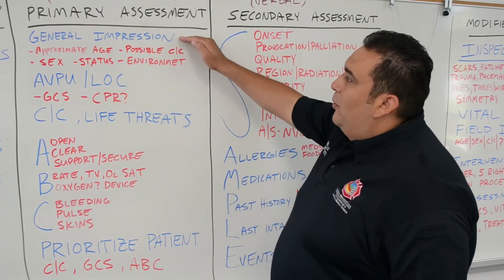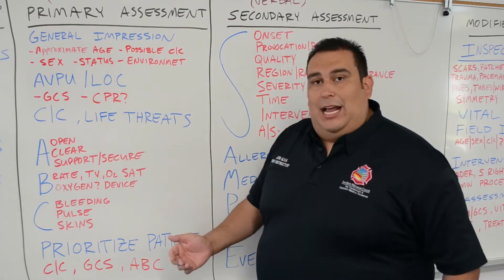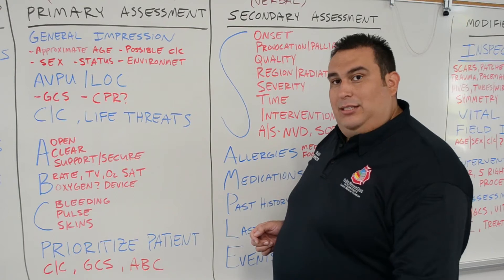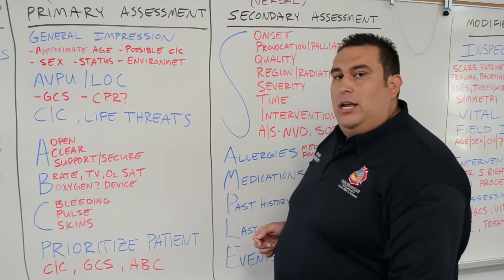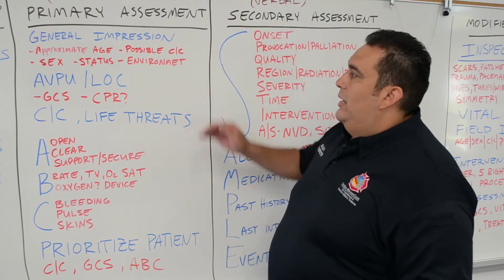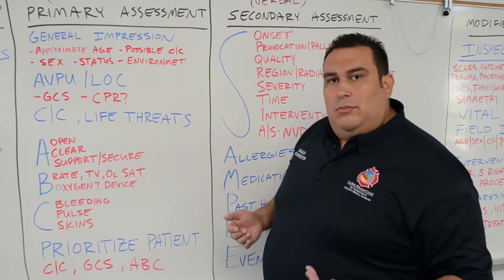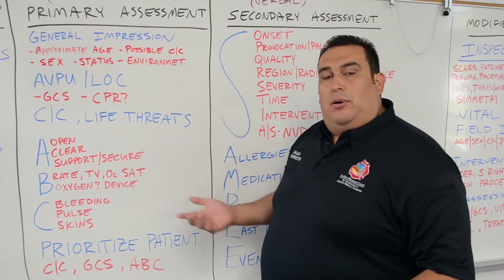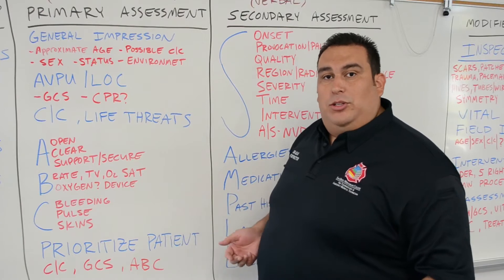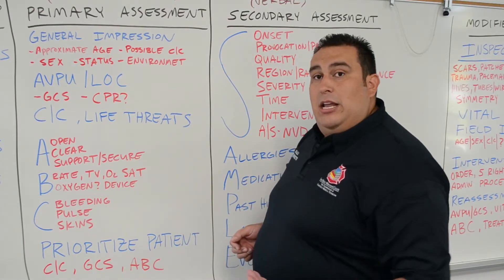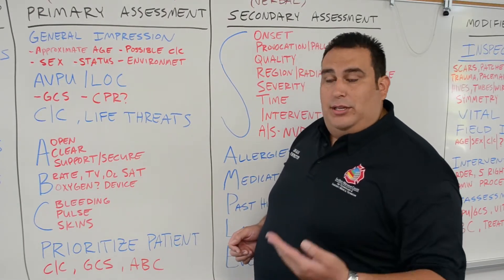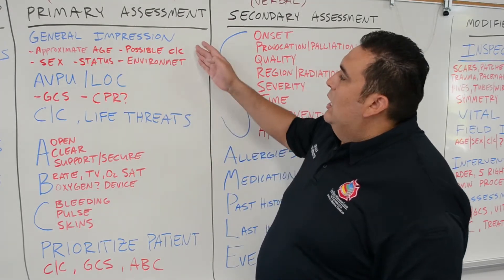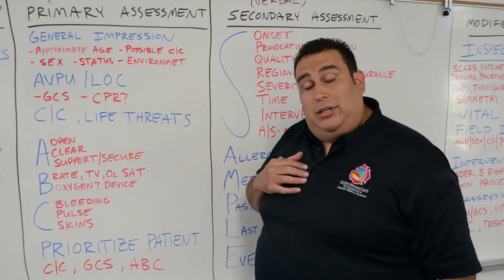The first part of our primary assessment is the general impression. As you approach your patient before making official contact, you're going to start forming your general impression. This sets the mood of the call. First, we're going to get an approximate age, which can help determine relevant questions — for example, whether I'm seeing a 90-year-old female or a 5-year-old child. Then we assess a possible chief complaint.